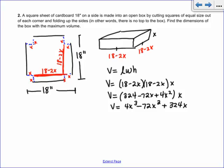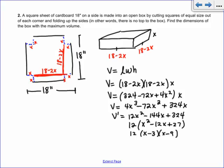Now we take the derivative: 12x squared minus 144x plus 324. The number 12 goes into all of those, so we factor out 12, giving x squared minus 12x plus 27. That factors into (x minus 3)(x minus 9). Setting the derivative equal to zero gives x equals 3 and x equals 9. This is where you eliminate one possibility — we eliminate x equals 9. You can't cut 9 inches from both sides and still have volume. It's like creating an envelope — there would be no thickness to the box.